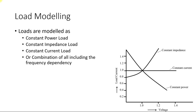An example of a constant power load is a typical induction motor load. When voltages decrease, the motor increases its current to maintain the same MVA rating — since P = VI, if V is reduced, I must increase. An example of a constant impedance load is a lighting load. For a typical light bulb with a tungsten filament, when voltages are reduced the bulb becomes dim, meaning the current reduces so that the impedance Z remains the same.